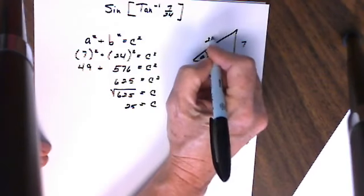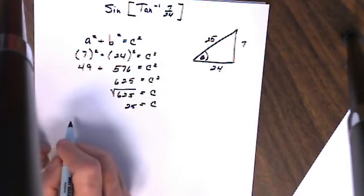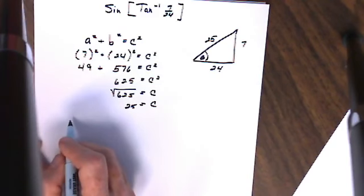Now that makes sense because I know the hypotenuse is always supposed to be the longest side in any right triangle.